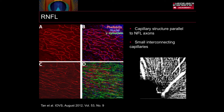The first image looks at the retinal nerve fibre layer. Here the capillary structure runs parallel to the nerve fibre layer axons. There are small connecting capillaries and areas, and the vascular plexus is a planar or mono-layer of blood vessels. Again, this can be seen clearly within the OCTA image.